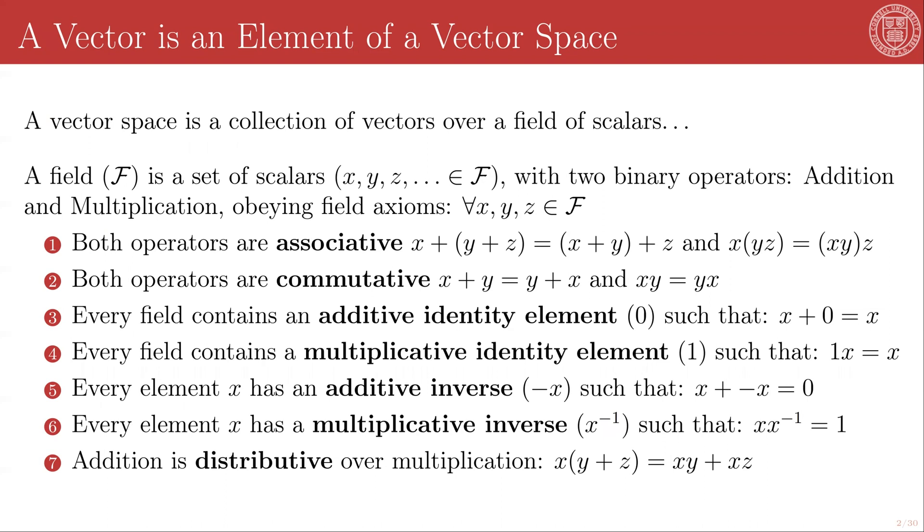All right, so let's back up. A field, which we'll call F, right here, is a set of scalars, say x, y, z, belonging to this F and many others, and it has two binary operations, addition and multiplication. All right, binary operators mean that they take two elements of the field, and so we have F operated on another element of F, and that gives you back a third element of F, potentially a new one. So that's what binary means, okay?